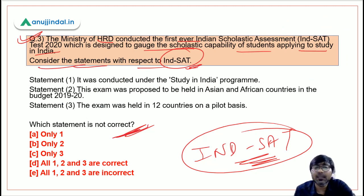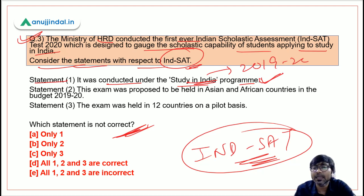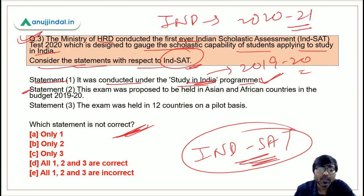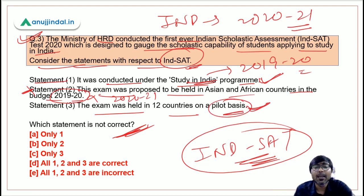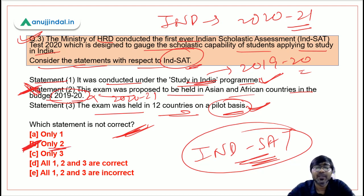Considering the statements: Statement one — it was conducted under the Study in India program — is absolutely correct. Statement two — this exam was proposed to be held in Asian and African countries in budget 2019-20 — is incorrect, as it was announced in 2020-21. Statement three — it was held in 12 countries on a pilot basis — is correct. Therefore the incorrect statement is only statement two, and the correct answer is option B.